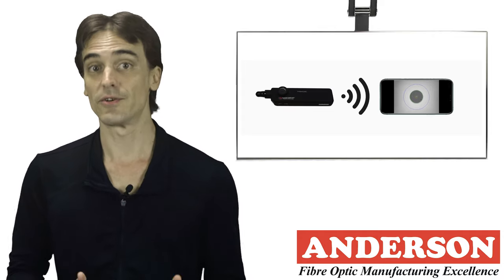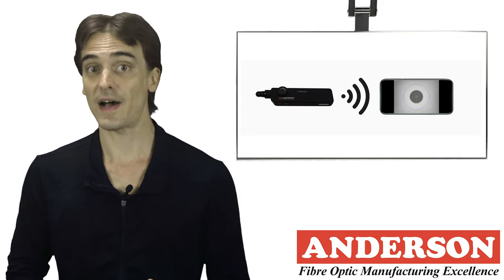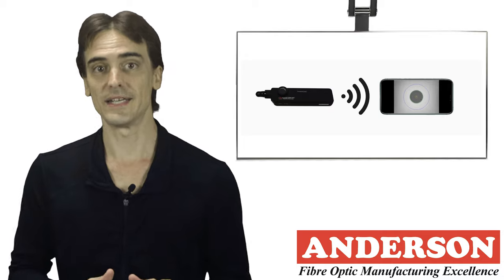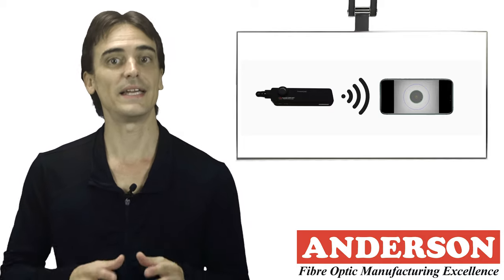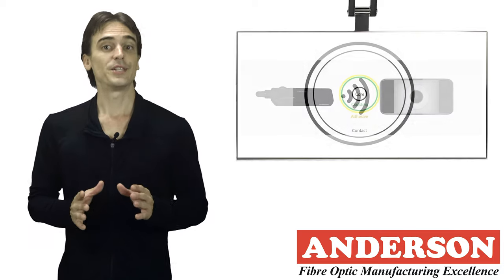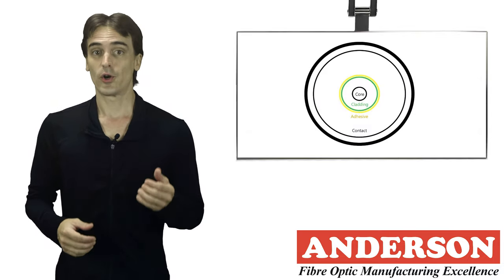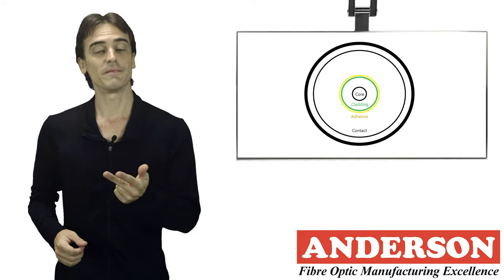IEC 61300-3-35 grades fiber cleanliness based on the quality and size of scratches and defects in each region of the end face. Each region is referred to as zones: core, cladding, adhesive, and contact.